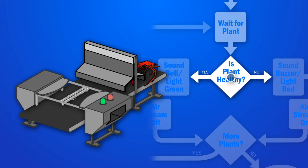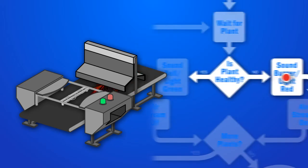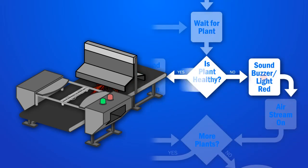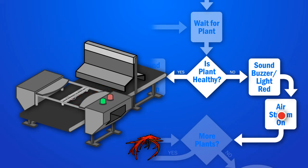If it were not healthy, we would follow the no arrow instead, which leads to a block that turns the light red and pushes it into the reject bin.